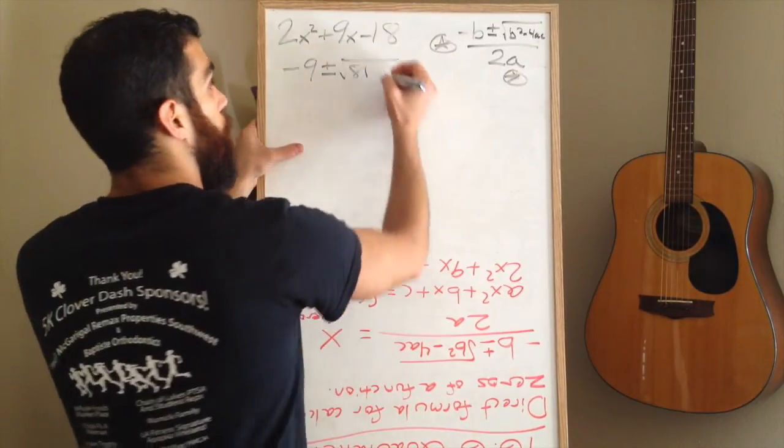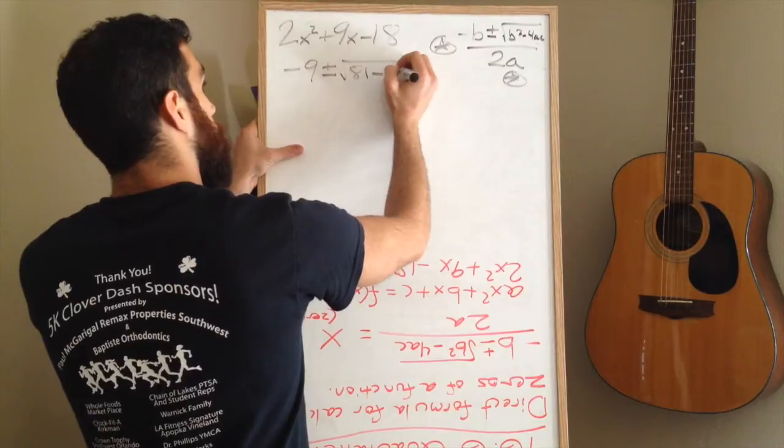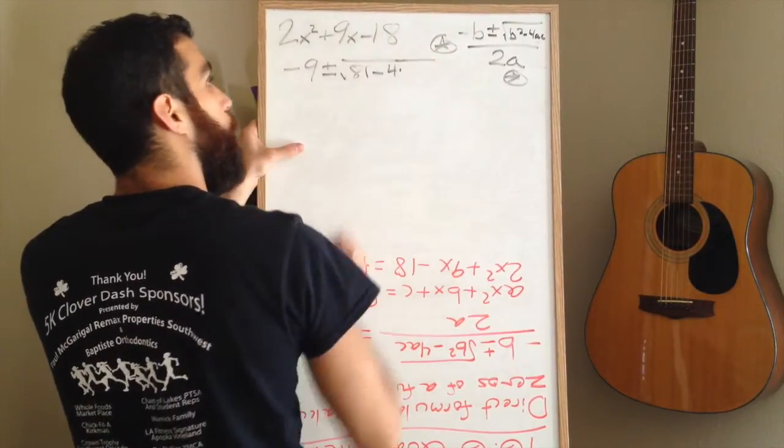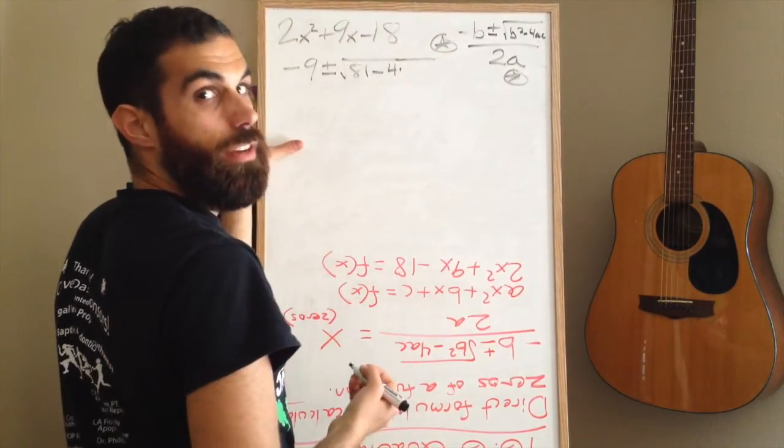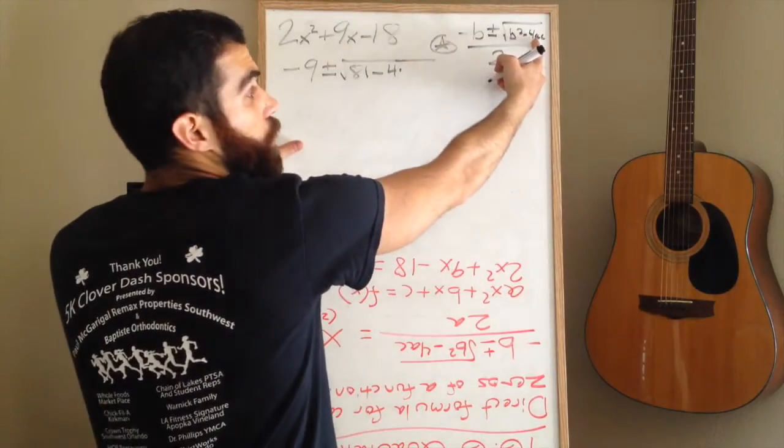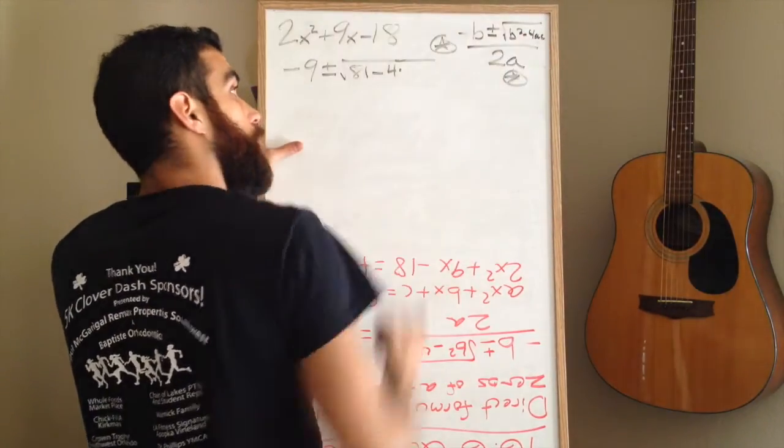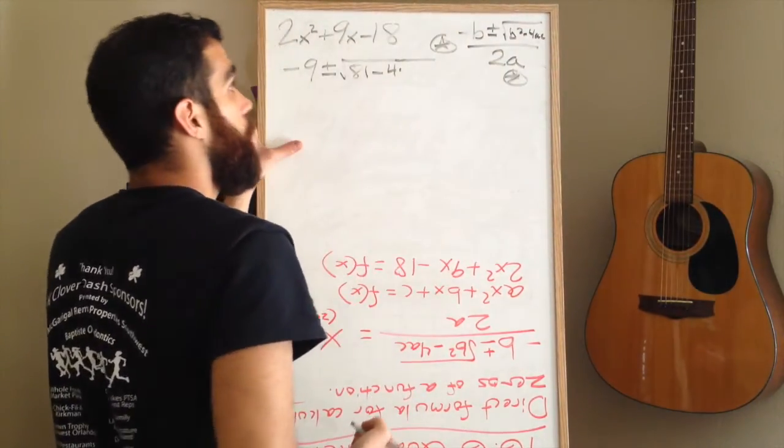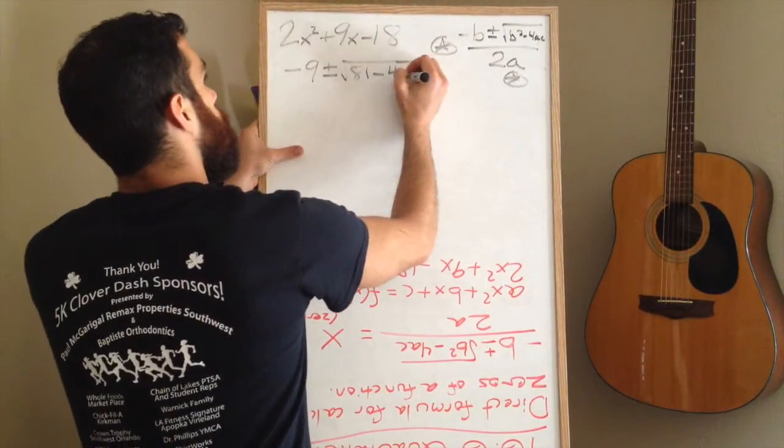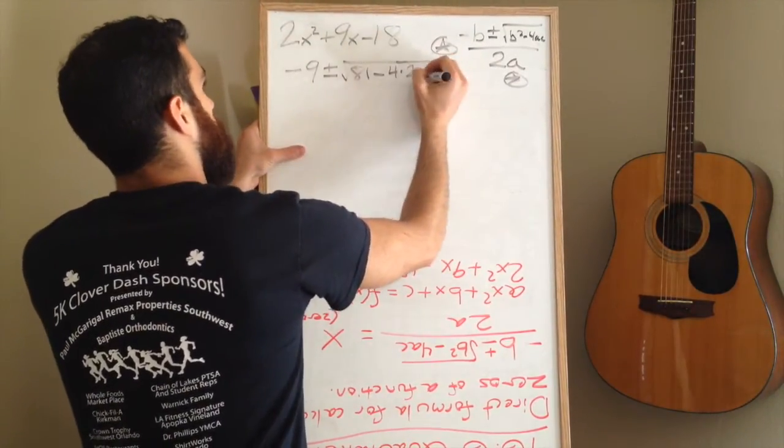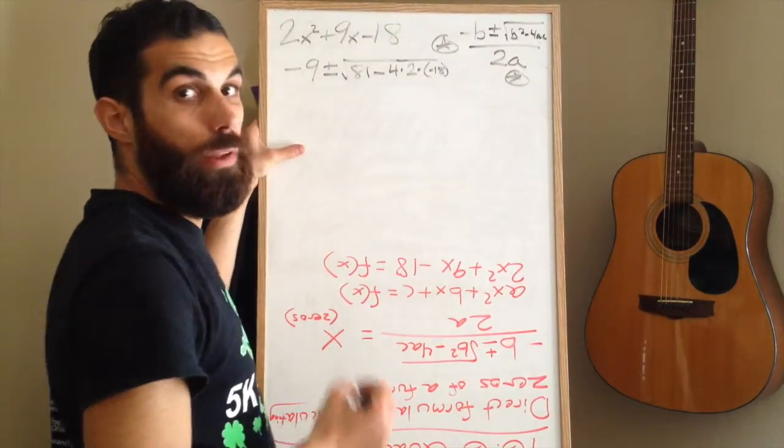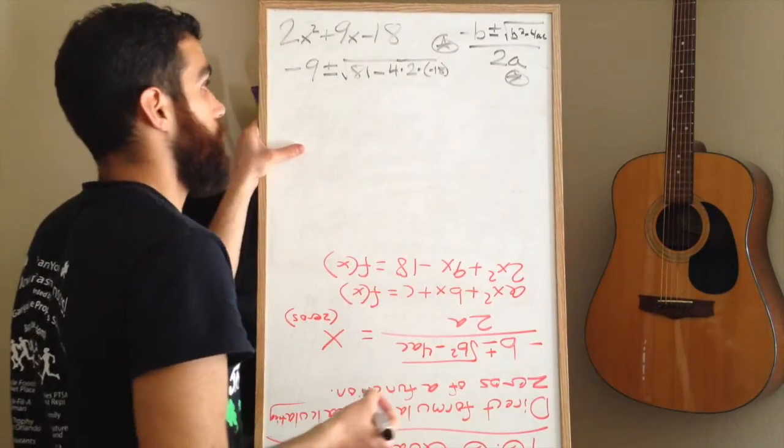Next, you write down the minus sign, and then you have the number 4. The number 4 is multiplying a and c, because when a number is next to a letter, or a letter is next to a letter, that means you're multiplying. a is 2, c is negative 18, and I would always put the negative number in parentheses so that you avoid making silly mistakes.